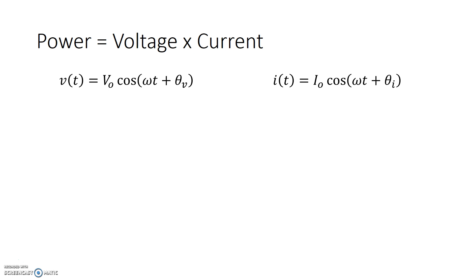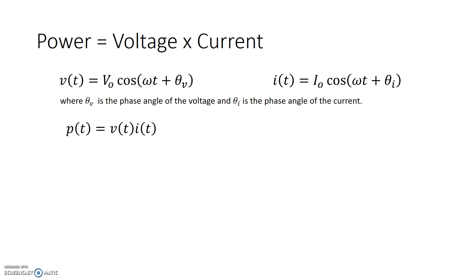These are two sinusoidal voltage and current expressions. In our case, at any given instance in time, power p is the voltage at that instance times the current at that instance. So when we talk about AC power, we have something called instantaneous power, which refers to the power at a given time. p(t) can be written as the voltage times the current at that instance in time.